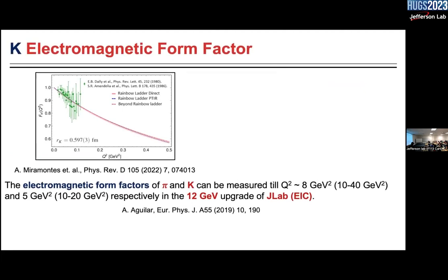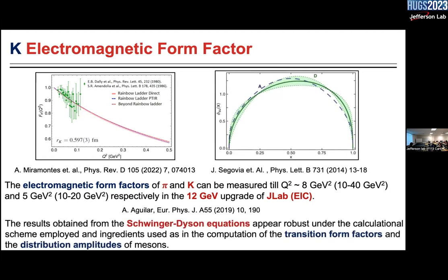We can do the same for the kaon. Even yesterday's constant mass approximation passes through the data, but the data is so sparse in Q² that anything basically will pass through. The 12 GeV upgrade has taken data for the kaon up to 5 GeV², and the preliminary analysis is already there. You can also compute the PDA for the kaon — work done by Jorge Segovia and Craig Roberts. Results obtained from Schwinger-Dyson equations appear to be robust under different calculational schemes within the same formalism.